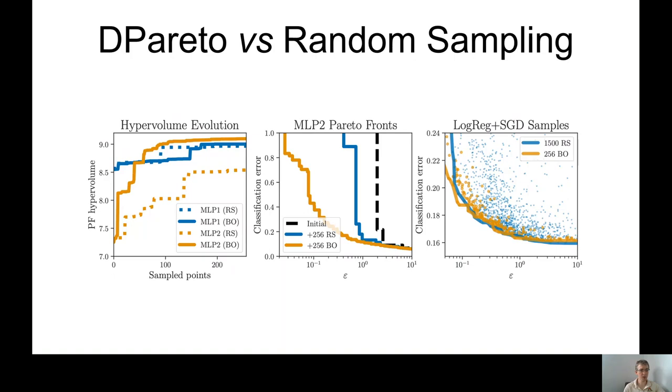Another experiment that we've run is we tried to compare Pareto fronts recovered with DPareto versus Pareto fronts recovered with random sampling. Now, the idea here is that instead of doing any fancy optimization at all, you just pick a number of points at random and build the Pareto front around the results. Now, random sampling is known to be a very good technique and eventually, it will recover very good Pareto fronts.